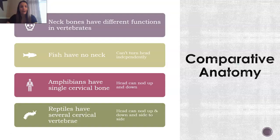When we talk about comparative anatomy, so far in terms of vertebrates we've talked about fish, amphibians, and now we're into reptiles. The neck bones are what are significantly different between these. Fish don't have a neck, so they can't turn their head — fish have to turn their whole body when they're turning.